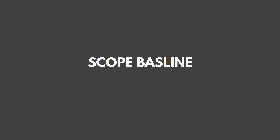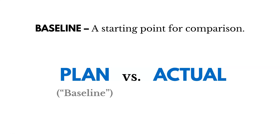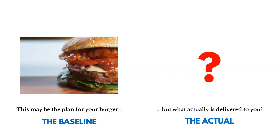A key output of the Create WBS process is the scope baseline. A baseline is a starting point used for comparisons — it's an approved version or approved plan that we compare against actuals. I like to think of it like going to a fast food restaurant: the picture of the hamburger is the baseline, but what actually gets delivered to you is the actual — and they may look very different.